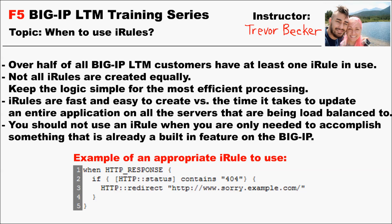An example of when you should not use an iRule is whenever you're only needing to accomplish a single function that already exists through the GUI or the CLI. The reason why that's the case is that it would take the Big IP more CPU resources to compile the logic within that iRule versus just using a built-in feature that's configured on that virtual server.